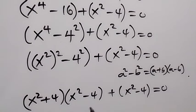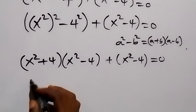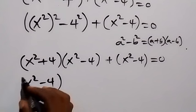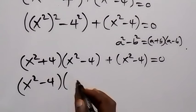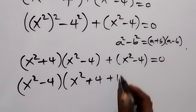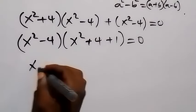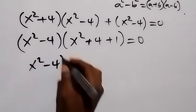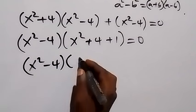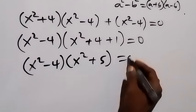We notice x squared minus 4 is common. Taking x squared minus 4 out as a common factor, what remains inside the bracket is x squared plus 4, plus 1, which is x squared plus 5. So we have x squared minus 4, times bracket x squared plus 5, equals to zero.